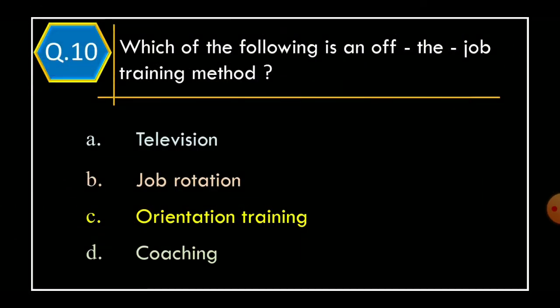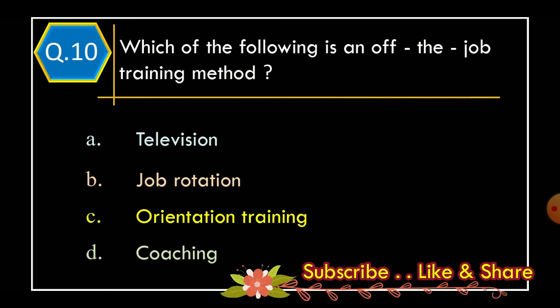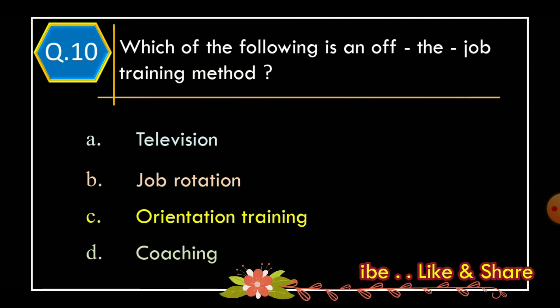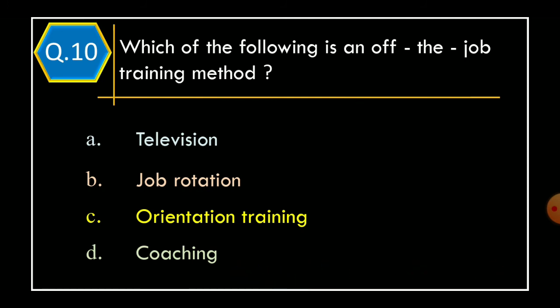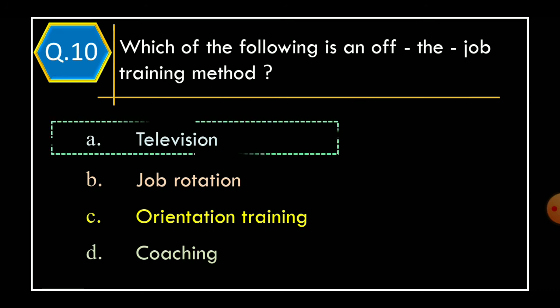Question 10. Which of the following is an off-the-job training method? Option A: Television. Option B: Job rotation. Option C: Orientation training. Option D: Coaching. The correct option is Option A: Television.